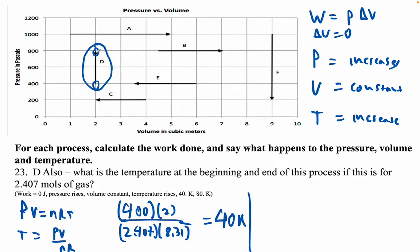Notice that we just doubled the pressure, therefore we would double the temperature. So the temperature at the end of D is going to be 2 times 40.